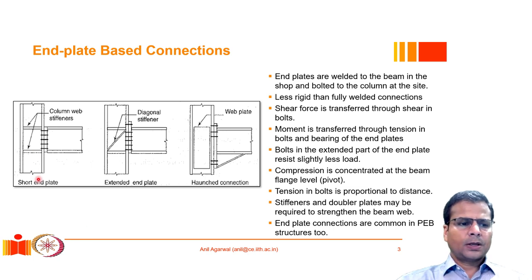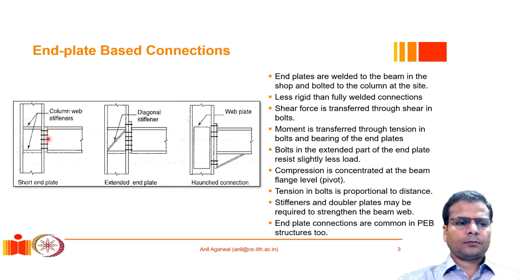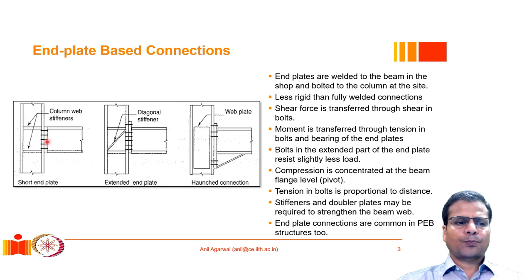Here you see three different configurations. In the first, the end plate is relatively short — it does not extend beyond the beam depth, and all bolts are provided only within the depth of the beam. In such a connection the moment is transferred through these bolts: one end will be under bearing, the other under tension. You must ensure the end plate is stiff and strong enough to transfer the moment over this smaller lever arm.